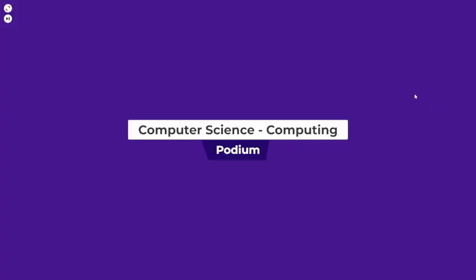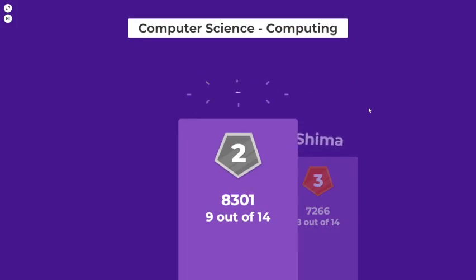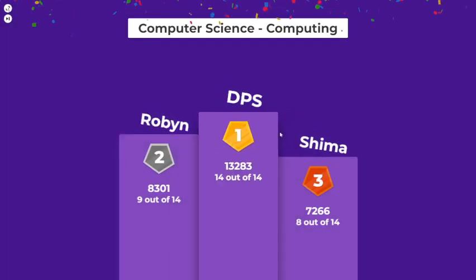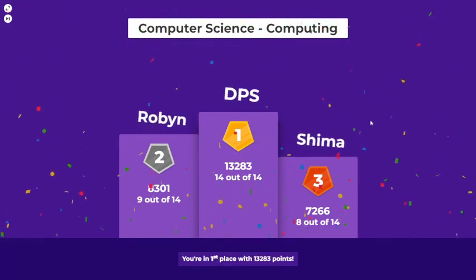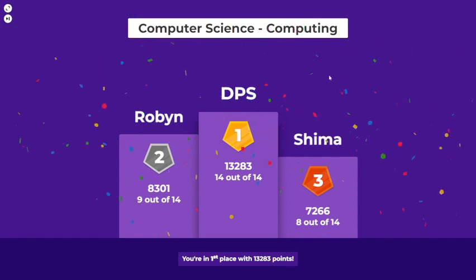Look at that, 14 streak! 14 out of 14! Shima got third place, Robyn second place. I wonder who's first? 14 out of 14, yay! Love it! So that was a good computer science quiz. You were in first place with 13,283 points. Computer science computing - pretty nice, fun quiz including some key points for high school key stage three. Well worth a look, definitely. And don't forget to like and subscribe for more computing quizzes coming soon!